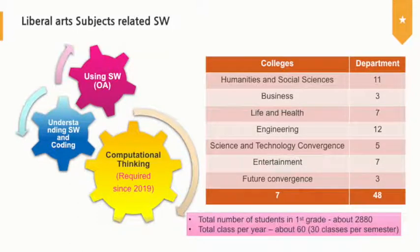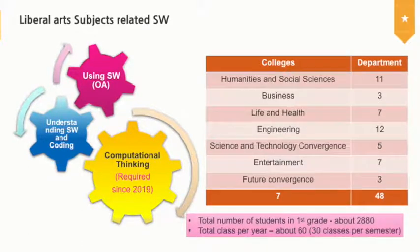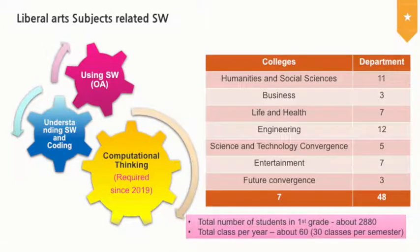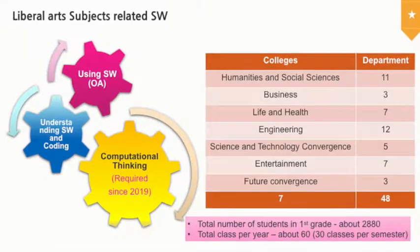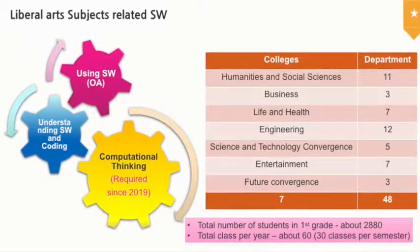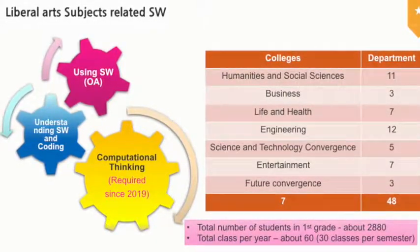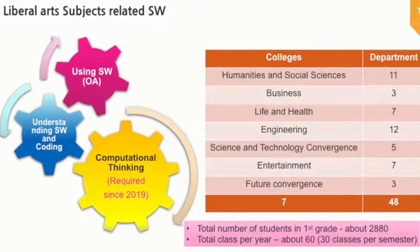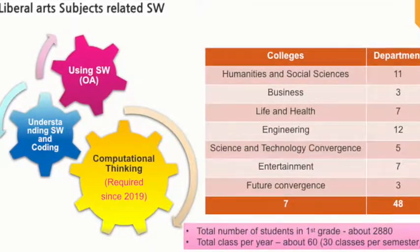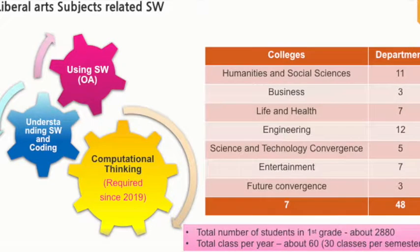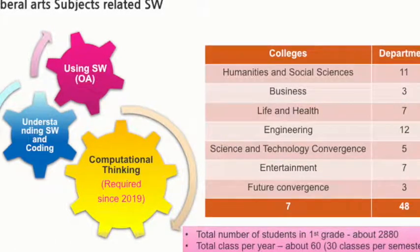In the liberal arts subjects related to software and computer science, there are three subjects: one is using software such as office tools; another is understanding software and coding, including programming with Scratch; and the most important is computational thinking. Computational thinking is required from this year, so all first-grade students must take this course.